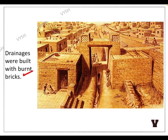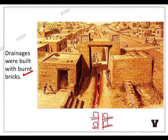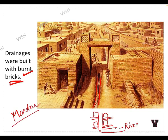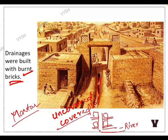Drainages were built with burnt bricks. A bigger drainage ran through the center of the city, connected to smaller drainages from houses and small industries. These were made with burnt bricks, connected through mortar to make them waterproof. Both covered and uncovered drainages were present.